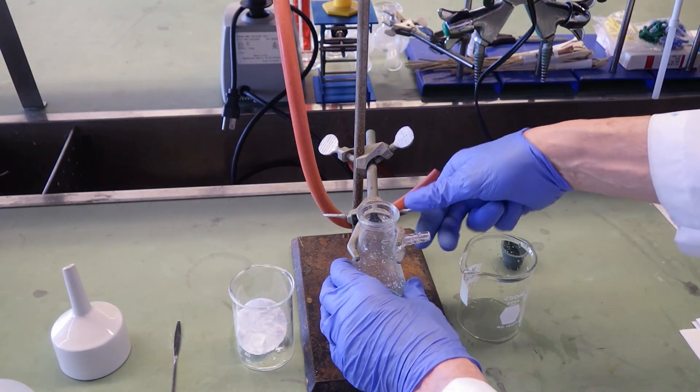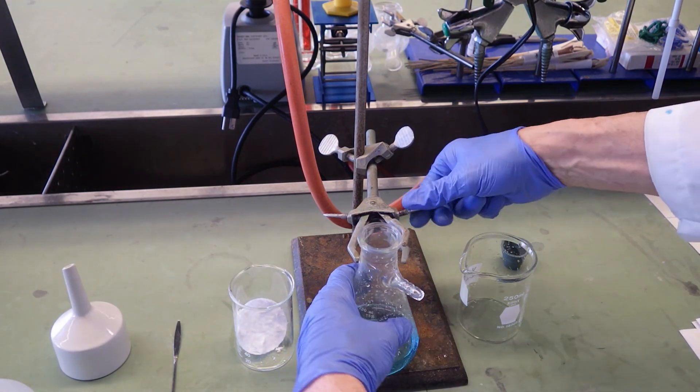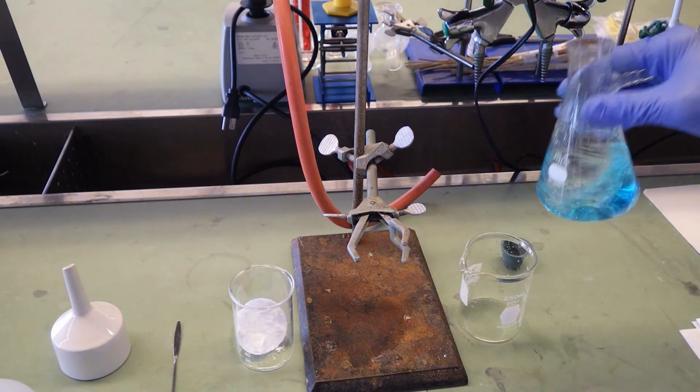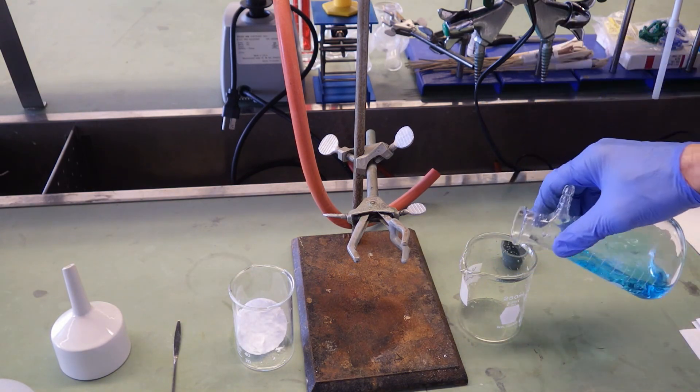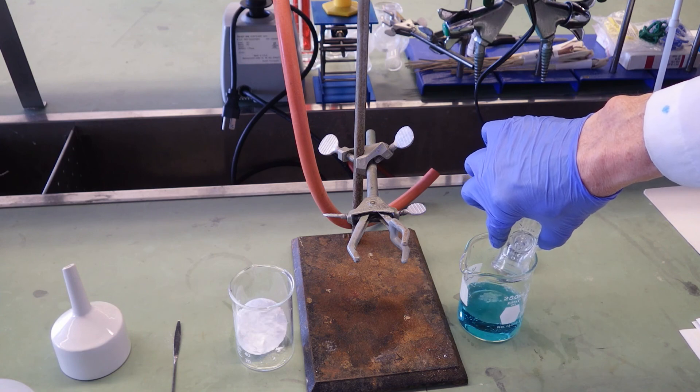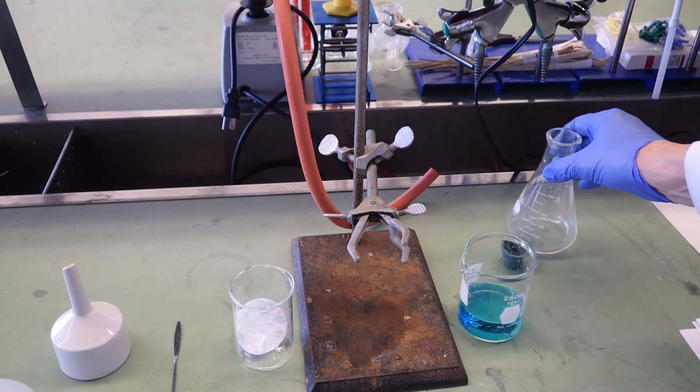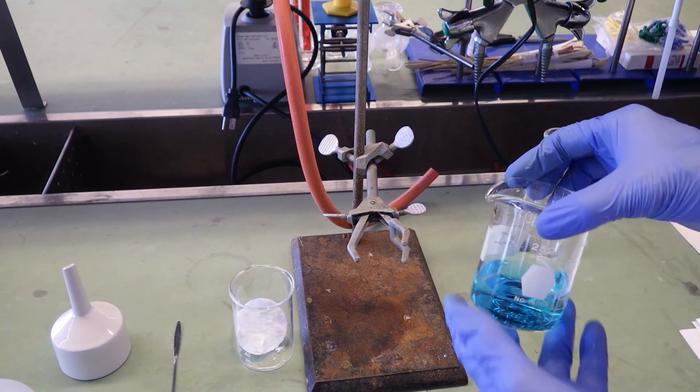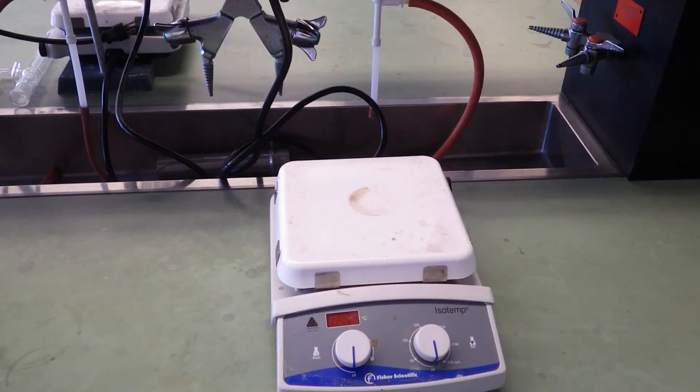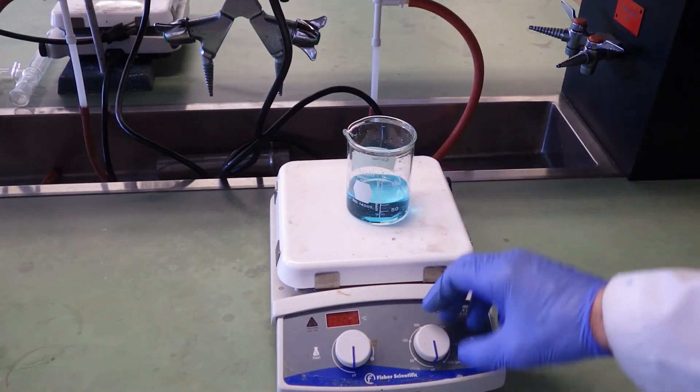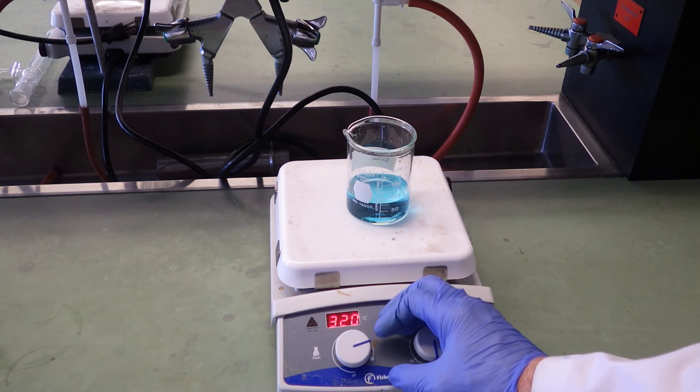Now the filtrate—we'll transfer that to a beaker and boil it down on a hot plate to about 15 milliliters, get rid of the bulk of the water.